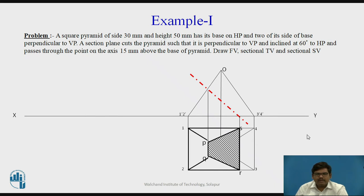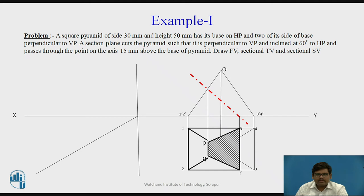We darken the remaining part of the pyramid. As this part has been removed, it is shown in thin line. Let us move to the side view. We draw a vertical XY line and draw the 45-degree line. You can also draw the side view using the rotation method or this 45-degree line method.